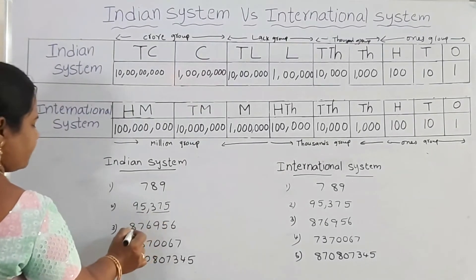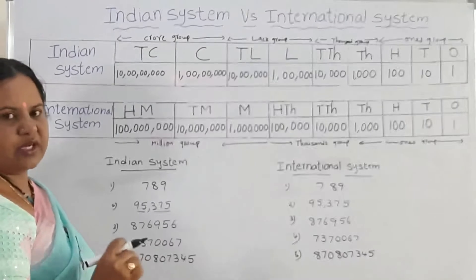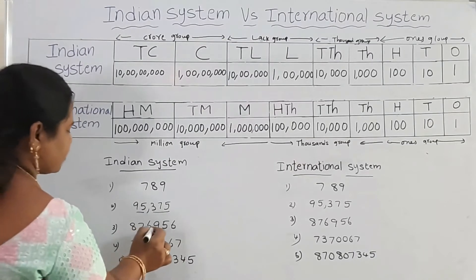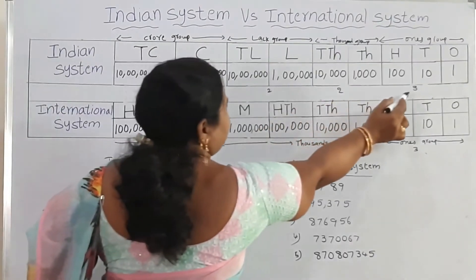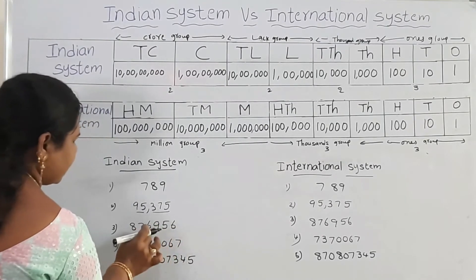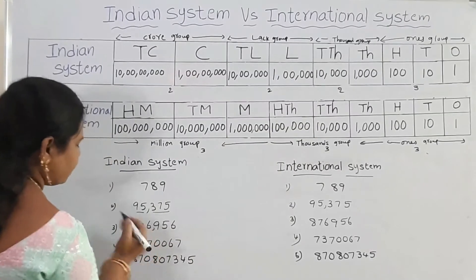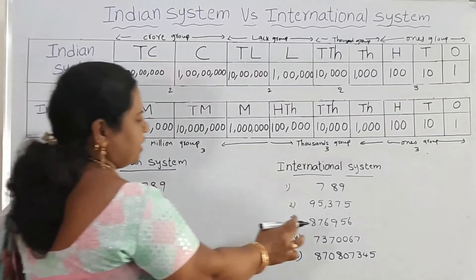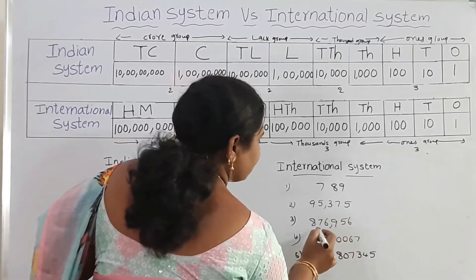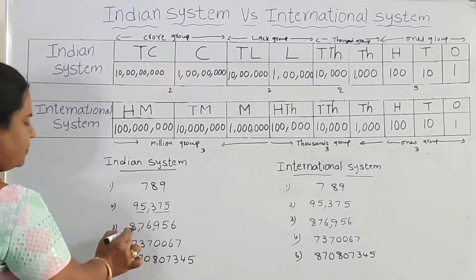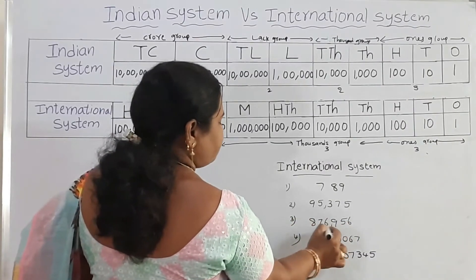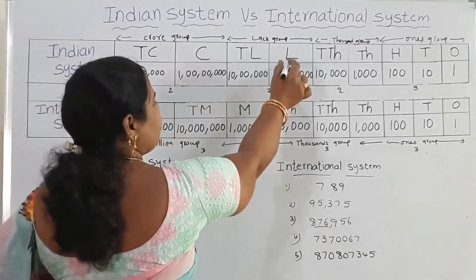Look here — there is a 6-digit number: 8, 7, 6, 9, 5, 6. We will write this in both the Indian system and international system. In the Indian system, from right to left, 3 then 2 pattern — first three places form the ones group, next two places form the thousands group. So the Indian system writes it as 8,76,956. In the international system, the 3-3 pattern gives 876,956.